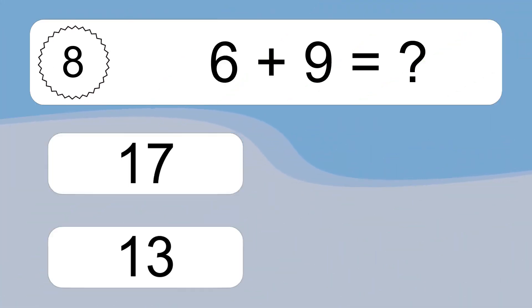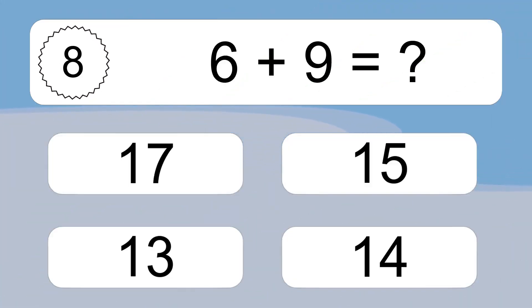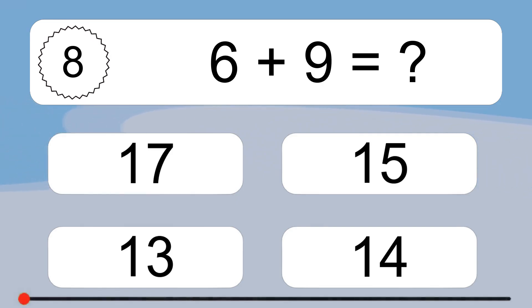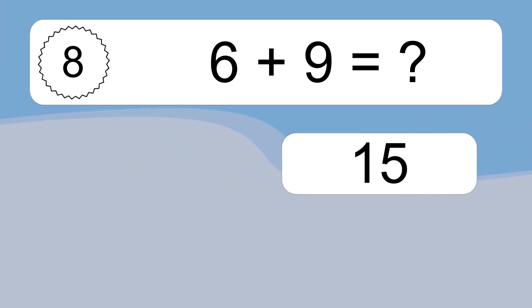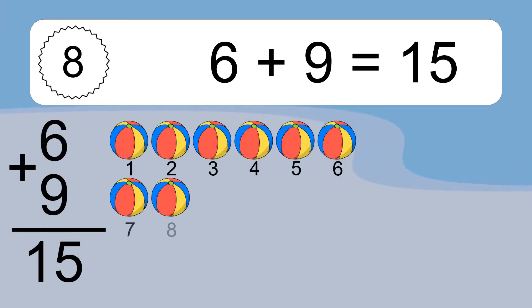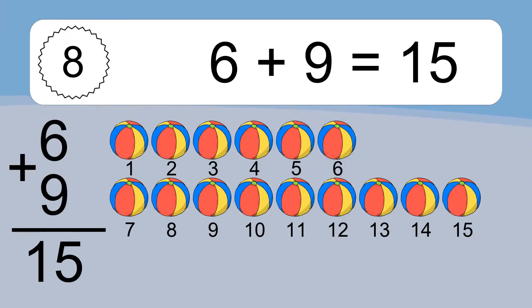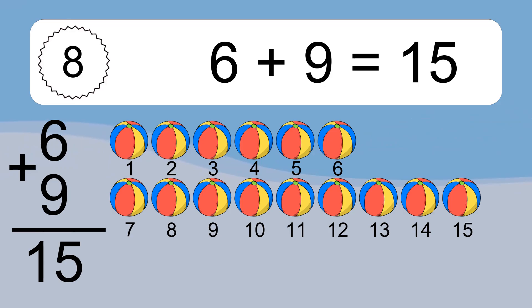1 plus 9 equals what? 1 plus 9 equals 15. Let's count it. 1, 2, 3, 4, 5, 6, 7, 8, 9, 10, 11, 12, 13, 14, 15.